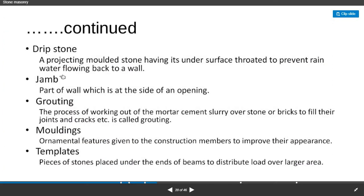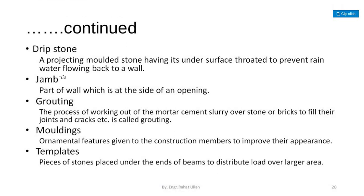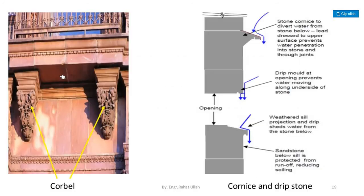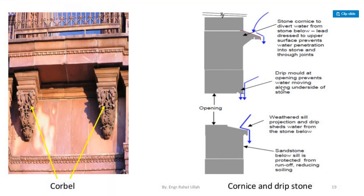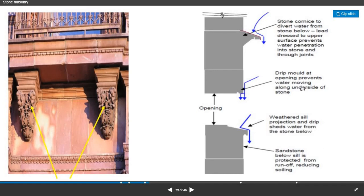Drip stone — a projecting moulded stone having its under surface throated to prevent rain water from flowing back to the wall is known as drip stone. Here you can see the drip mould at an opening, which prevents water from moving along the underside of the stone.